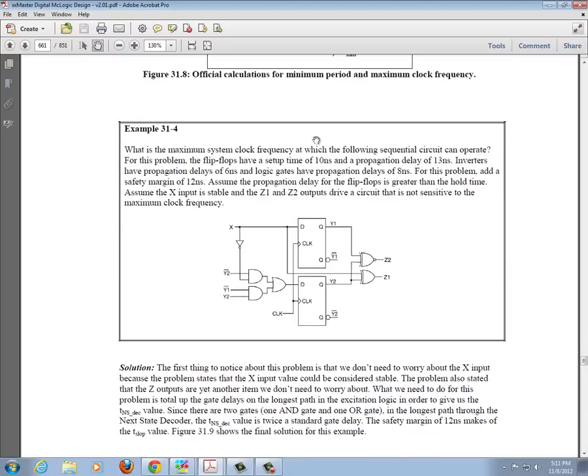Okay, so that means we're going to need the setup time, the propagation delay, the amount of time to get through this logic. We can ignore the inverter because X is stable, so we need 8 nanoseconds for this AND gate and 8 nanoseconds for this OR gate, and then the safety margin of 12. So you'll see that here.